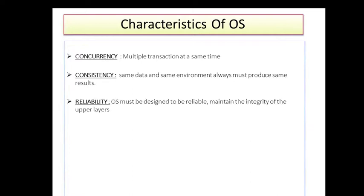The third characteristic is reliability — being trustworthy and performing consistently well. Our operational system should be designed to be reliable and maintain data integrity. It should also support high-volume users and transactions. For example, India's credit card users are in the billions, so the system must support multiple users and high-volume data. The last characteristic is predefined access paths.